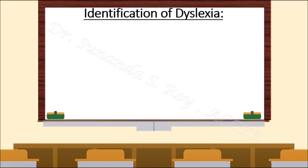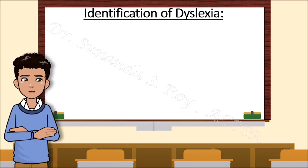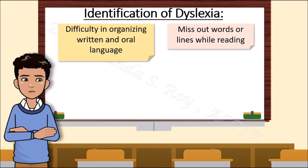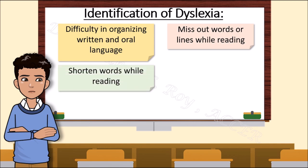How does one really identify dyslexia? Ishan says that he finds it difficult to organize his written and oral language, so reading becomes very challenging as it is difficult to organize the letters into words. This results in words or lines being missed out while reading. Another effect is that Ishan tends to shorten words that he is unable to identify.